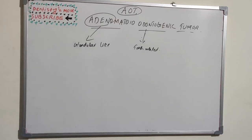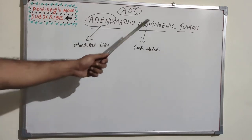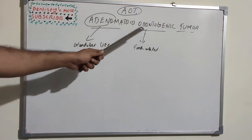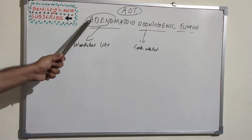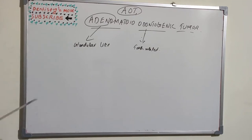Welcome back to a new session on dentistry. Today we have a different tumor: the Adenomatoid Odontogenic Tumor, or AOT. Last class we covered CEOT, the Calcifying Epithelial Odontogenic Tumor. From the name itself, 'odontogenic' relates to tooth or tooth-forming tissues, and 'adenomatoid' — adeno means gland — so this tumor has peculiar gland-like structures, which is why it is called Adenomatoid Odontogenic Tumor.